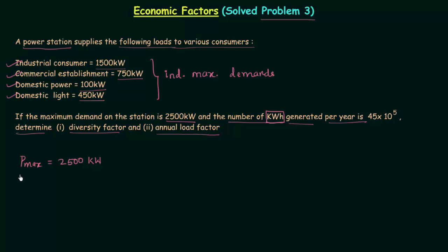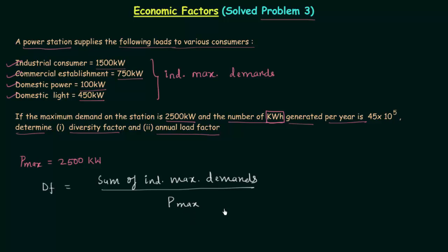Starting with the diversity factor: P_max equals 2500 kilowatt. The diversity factor equals the sum of individual maximum demands over P_max. The sum is 1500 plus 750 plus 100 plus 450, which equals 2800 kilowatt, divided by P_max of 2500 kilowatt, giving 1.12 as the diversity factor. As expected, it is greater than 1.